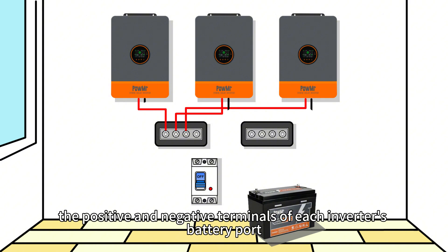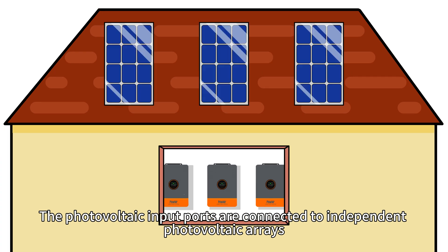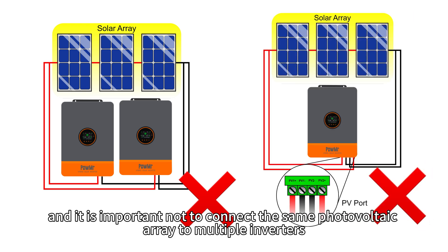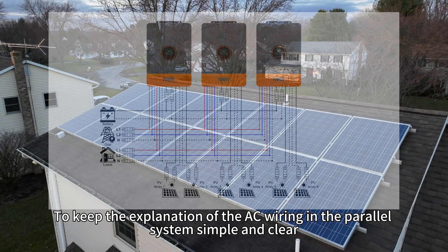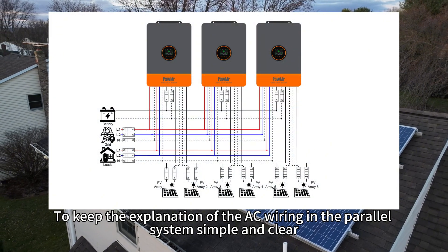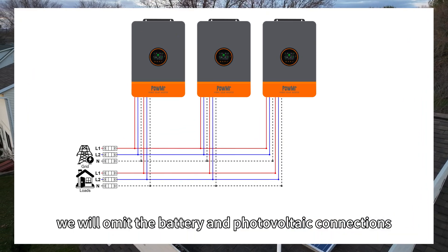In the power system, the positive and negative terminals of each inverter's battery port are connected to the battery. The photovoltaic input ports are connected to independent photovoltaic arrays, and it is important not to connect the same PV array to multiple inverters. To keep the explanation of the AC wiring simple and clear, we will omit the battery and photovoltaic connections.